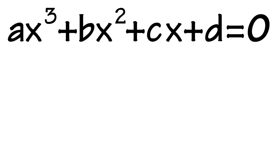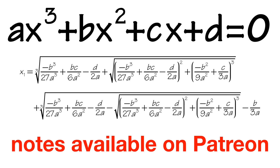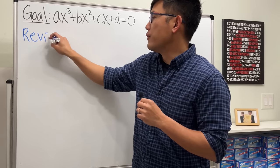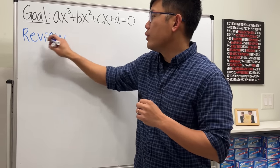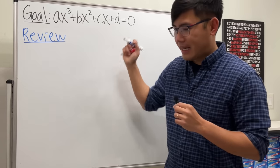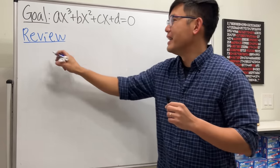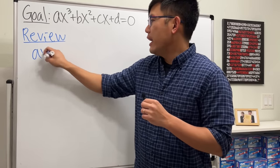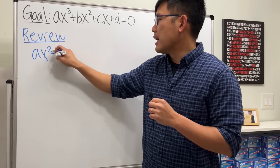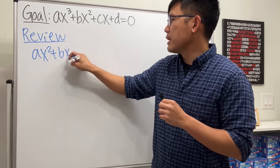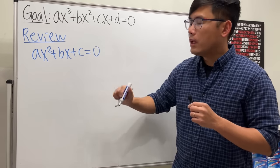Today I'm going to show you guys how to solve a cubic equation in the standard form. But before we do this, let's do a quick review on solving a quadratic equation in the standard form, and later on you are going to see the connections. Here, ax² + bx + c = 0.